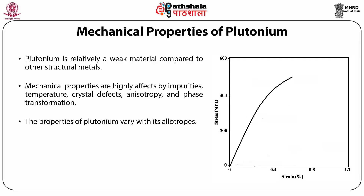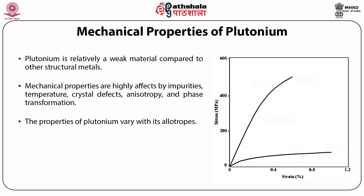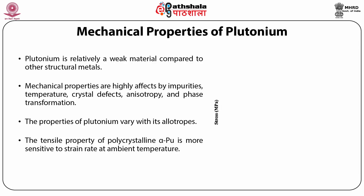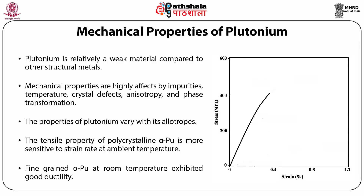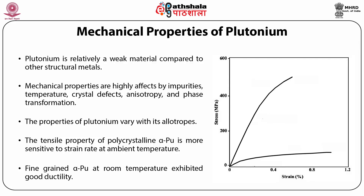The stress-strain curves of alpha-Pu and delta-Pu are shown in the figure. The mechanical strength of both alpha-Pu and beta-Pu is quite sensitive to temperature. The delta-Pu and epsilon phases have very low mechanical strength. The tensile property of polycrystalline alpha-Pu is more sensitive to strain rate at ambient temperature. Fine-grained alpha-Pu at room temperature exhibited good ductility, providing evidence that deformation mechanisms including grain boundary sliding and dislocation glide can operate.